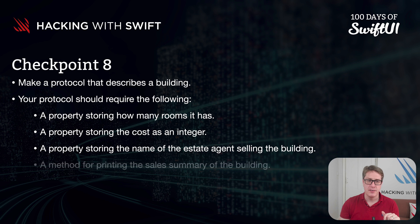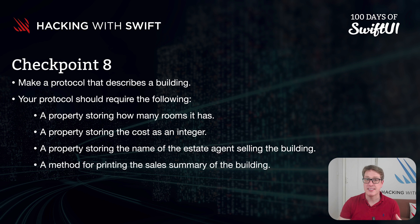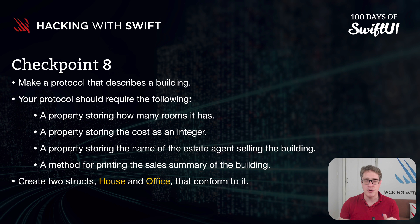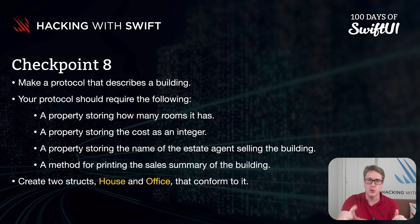Then add a method to print the sales summary describing what kind of building it is and its other properties. In terms of building kinds, I also want you to make two structs — House and Office — both of which should conform to your building protocol.